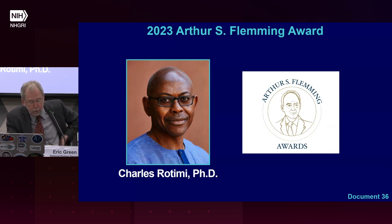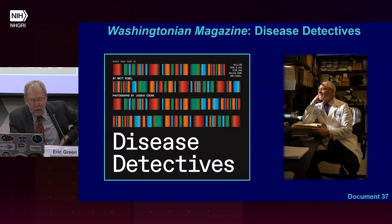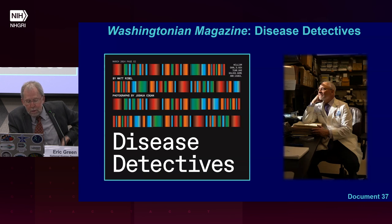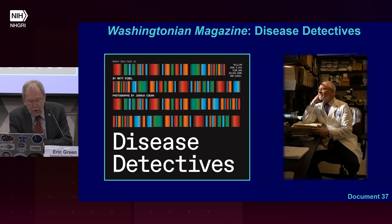In March, the Washingtonian magazine featured an article highlighting the Trans-NIH Undiagnosed Diseases Program, or UDP, part of the broader Undiagnosed Diseases Network. The UDP has always been led by Bill Gall and focuses on individuals whose conditions have eluded medical diagnoses. Patients selected for the UDP undergo diagnostic tests and expert consultations by a multidisciplinary medical team at the NIH Clinical Center, using state-of-the-art genomic techniques to offer patients the hope of a diagnosis and the possibility of therapeutic interventions.